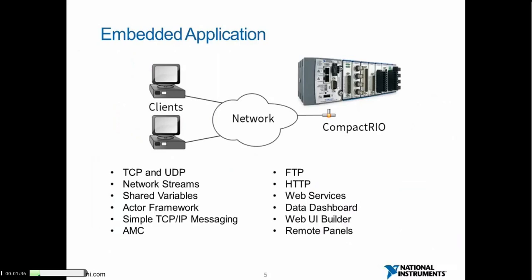For embedded CompactRIO applications, communication with a remote client is often a critical part of the project. Embedded applications typically function as data servers because their primary role is to report information to the client. They are also usually capable of responding to commands from the client to perform application-specific activities. There are many data transport mechanisms available, and choosing the appropriate one depends on your communication model.